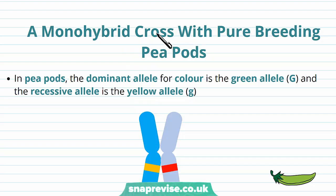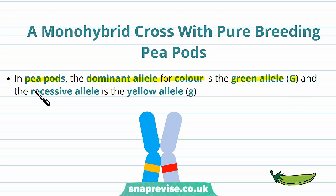So bearing all this in mind, let's look at how we can make a monohybrid cross. In the pea pods, the dominant allele for colour is the green allele, which is represented by large G, and the recessive allele is the yellow allele, little g.